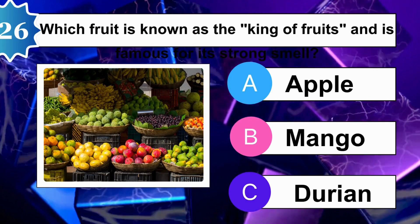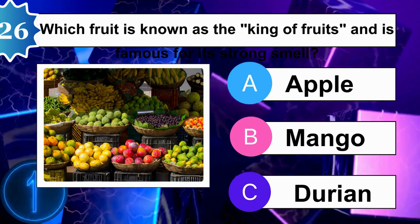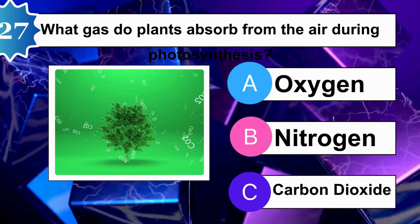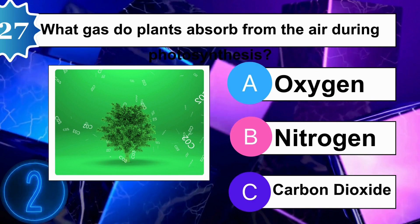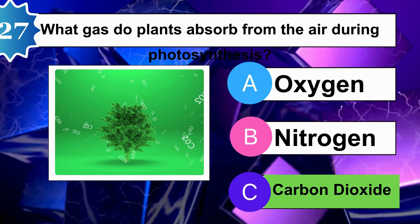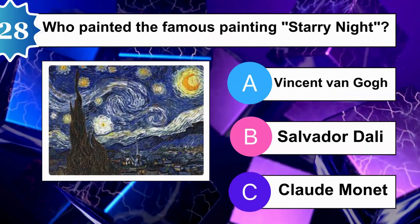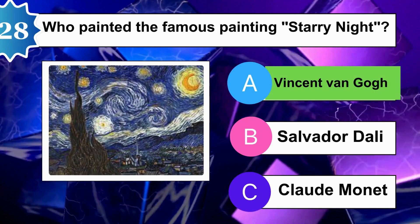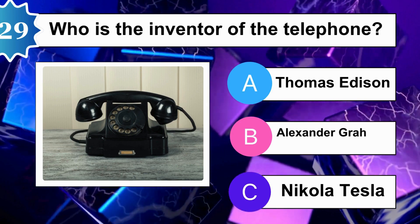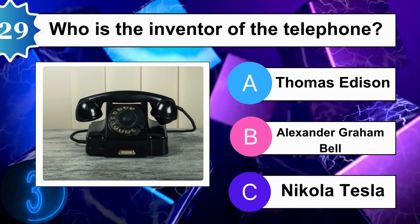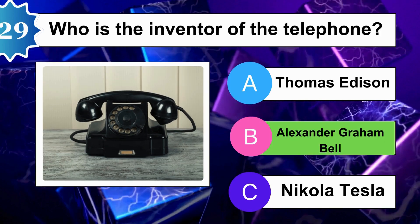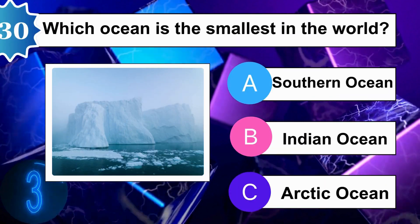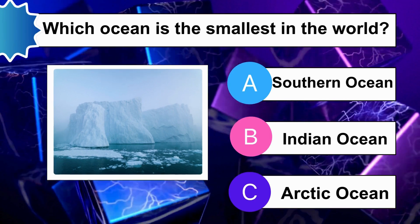Which fruit is known as the King of Fruits and is famous for its strong smell? What gas do plants absorb from the air during photosynthesis? A is correct. Who is the inventor of the telephone? A is correct. Which ocean is the smallest in the world? C is correct.